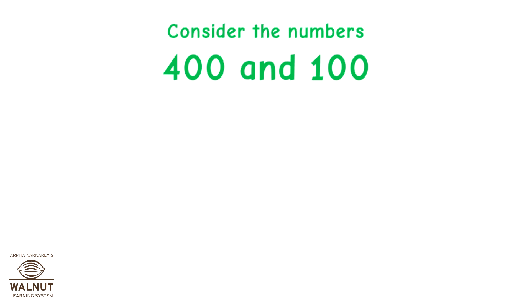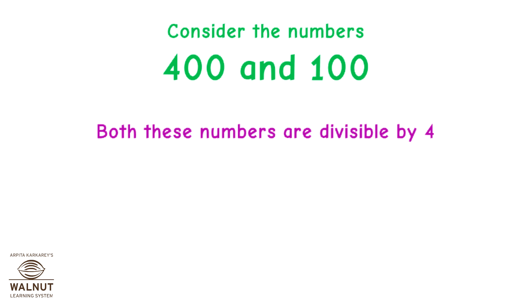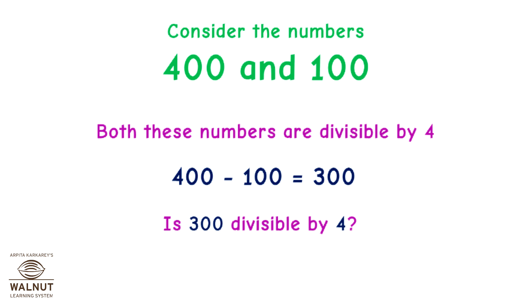Consider the numbers 400 and 100. Both these numbers are divisible by 4. 400 − 100 = 300. Is 300 divisible by 4? Yes.